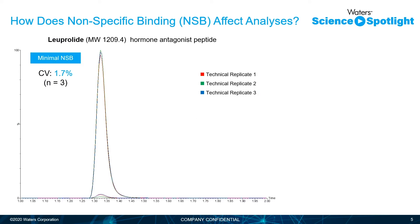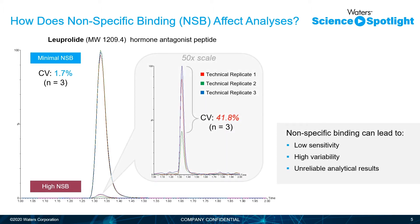So how does nonspecific binding affect our analysis? Here we're looking at a chromatogram of leuprolide, which has a molecular weight of about 1,200. In this circumstance, we have very little nonspecific binding — our percent CV is 1.7% with an n of 3, so our reproducibility is quite good. But if we were to take that same sample and not control for nonspecific binding losses, we get a very high CV of 42%. So we have very low repeatability, and the result is low sensitivity, high variability, and ultimately unreliable analytical results.